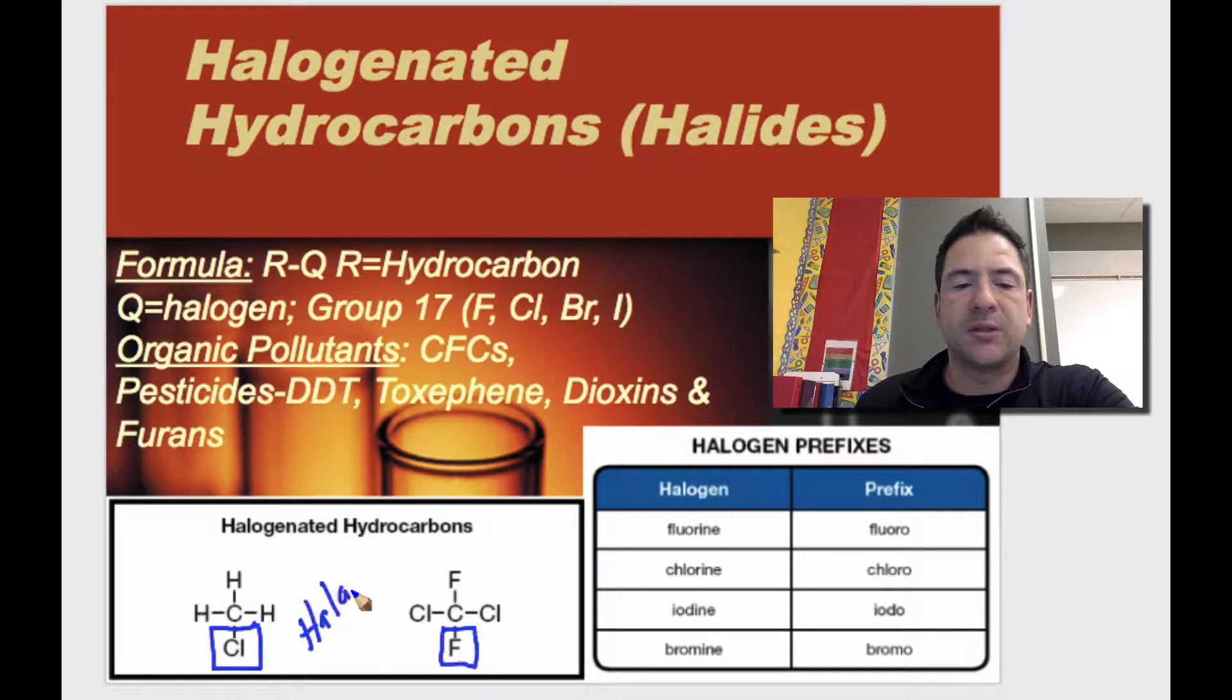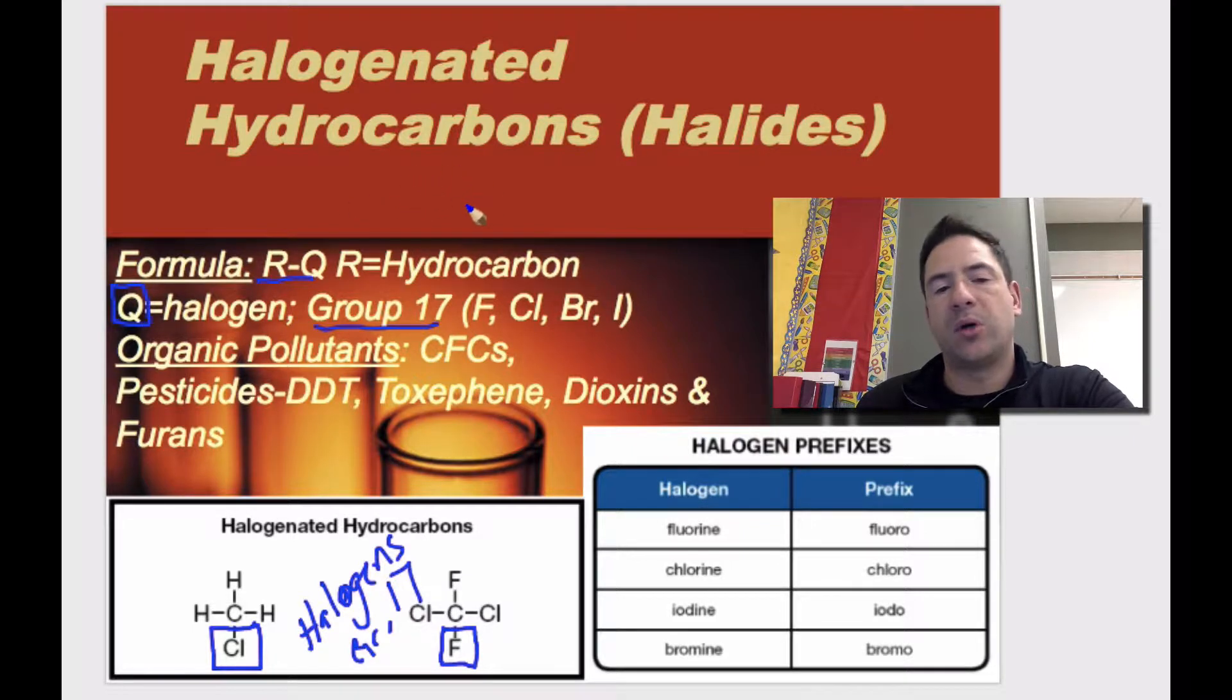Remember, halogens are found in group 17 on the periodic table, and it'll show that right there. They are represented in your data booklet by a Q. And so their formula is RQ, meaning a hydrocarbon bonded to a halogen. The different halogens and their prefixes are important to know. These are listed in the data booklet.